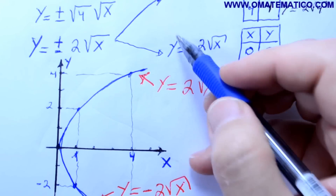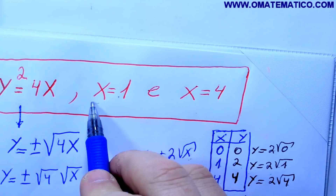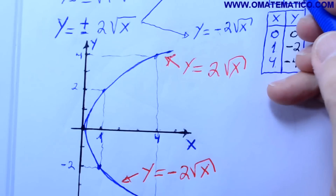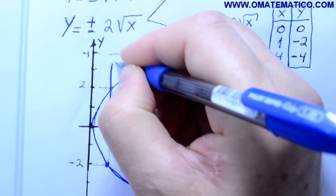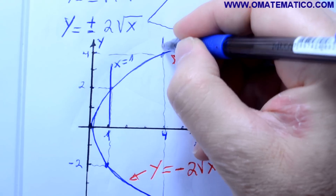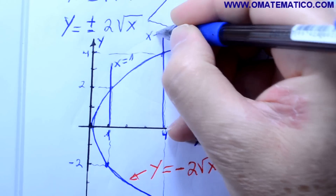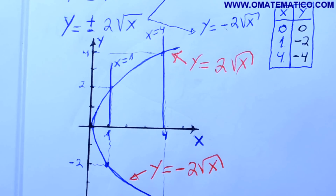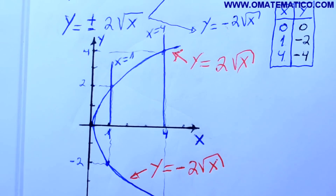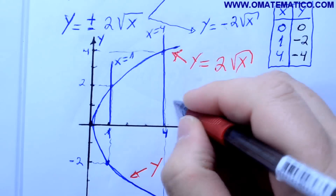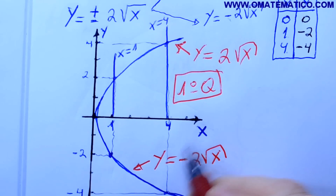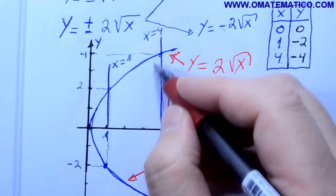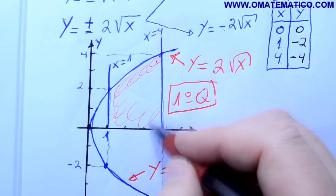Então, aqui no caso, tem também a limitação x igual a 1 e x igual a 4. As linhas x igual a 1 e x igual a 4 estão aqui: x igual a 1 é uma linha aqui e x igual a 4 é uma linha aqui. A área que eu estou querendo é do primeiro quadrante. Primeiro quadrante é este aqui — este de baixo já é o segundo quadrante, então não me interessa, porque o exercício pede a área no primeiro quadrante.